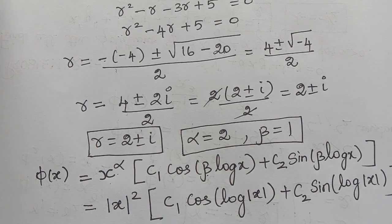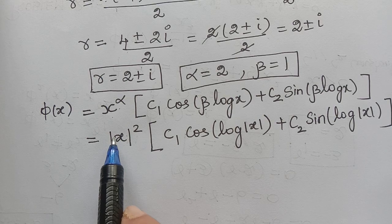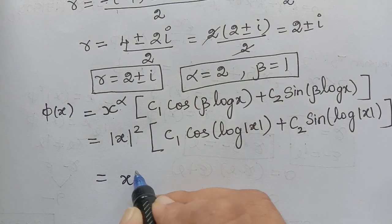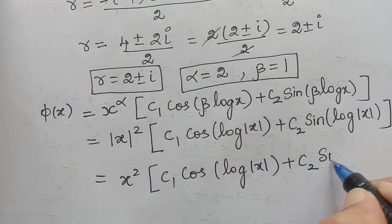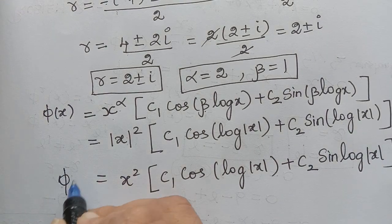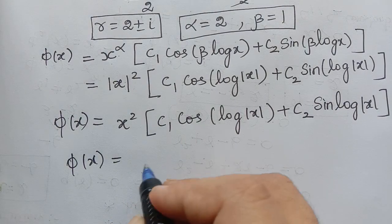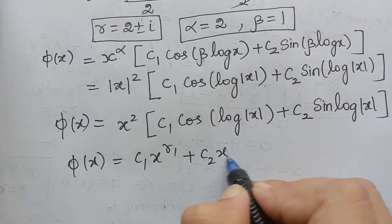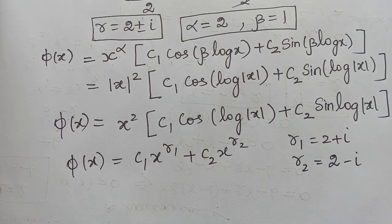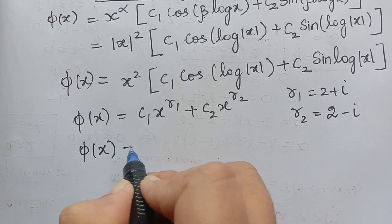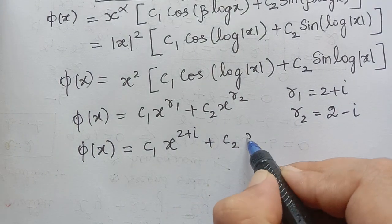Since |x|² = x² is always positive, we need not keep the modulus for that term, giving φ(x) = x² · (c1·cos(log|x|) + c2·sin(log|x|)). An alternative solution is φ(x) = c1·x^r1 + c2·x^r2 where r1 = 2+i and r2 = 2−i, giving φ(x) = c1·|x|^(2+i) + c2·|x|^(2−i).